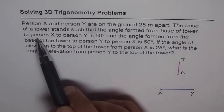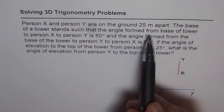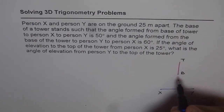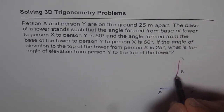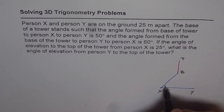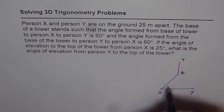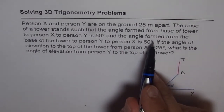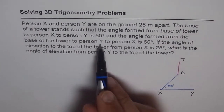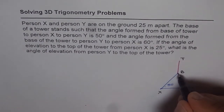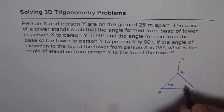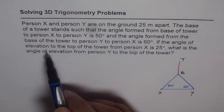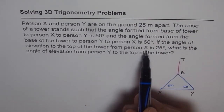The base of the tower to person X to person Y — that angle is 50 degrees. And the angle formed from the base of the tower to person Y to person X is 60 degrees. So this angle at X is 50 degrees and this angle at Y is 60 degrees. If the angle of elevation to the top of the tower from person X is 25 degrees.